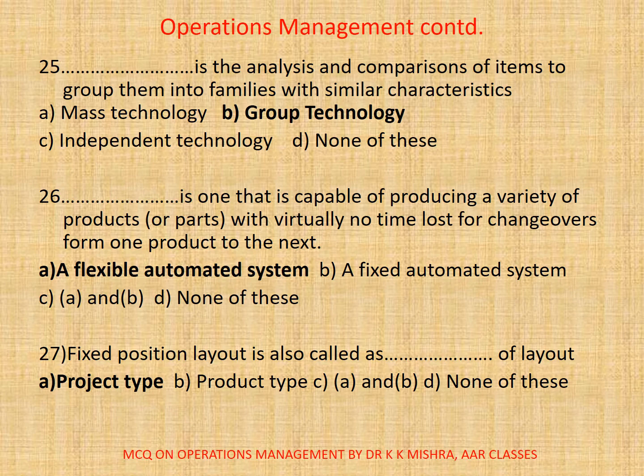26. Dash is one that is capable of producing a variety of products or parts with virtually no time loss for changeovers from one product to the next. A. A flexible automated system. B. A fixed automated system. C. A and B. D. None of these. The correct option is A. A flexible automated system.